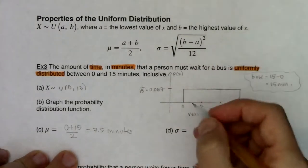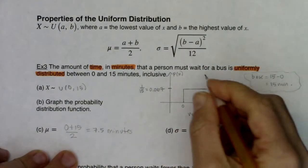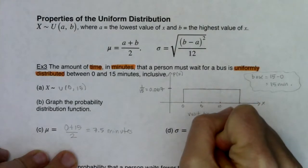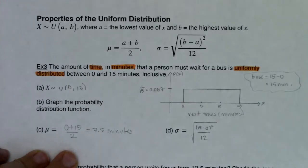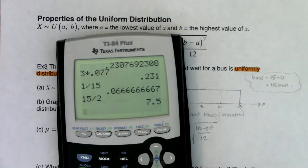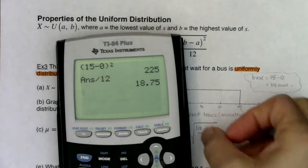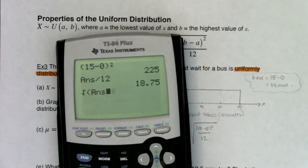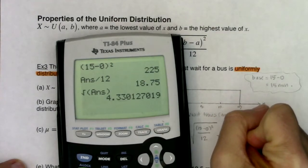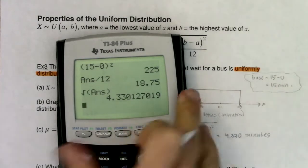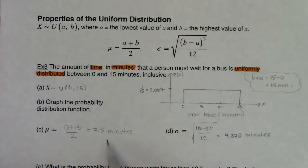The standard deviation is a little more convoluted. We take the square root of b minus a squared over 12 — so the square root of 15 minus 0, squared, divided by 12. The radicand is 225 divided by 12, which is 18.75. The square root of 18.75 is about 4.33 minutes. So on average, somebody's waiting 7 and a half minutes, and the average deviation from that mean is 4.3 minutes.